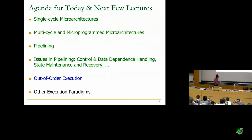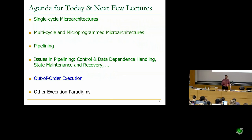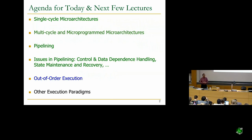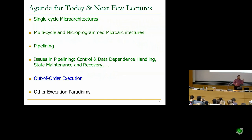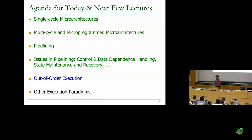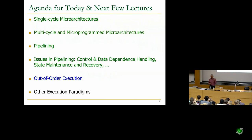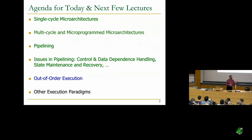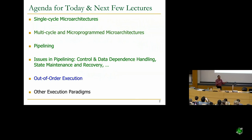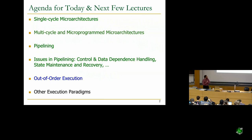People have developed many sophisticated algorithms to keep the pipeline full and moving in the presence of branches. Today we will talk about out-of-order execution because it's really the next thing that improves pipeline performance. This also exacerbates the branch problem, because you're going to fetch even more instructions into the processor. If you mispredicted a branch, you fetch a lot of wrong instructions into the pipeline and need to flush it — a lot of wasted work.